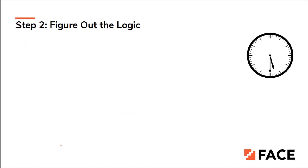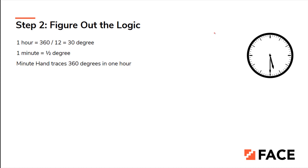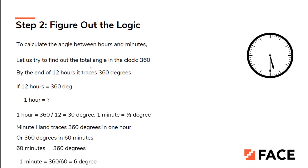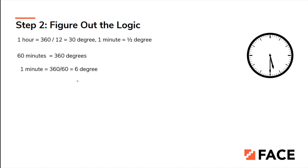For the minute hand, it traces 360 degrees in 1 hour, meaning 60 minutes equals 360 degrees. Therefore 1 minute equals 360 divided by 60, which equals 6 degrees per minute for the minute hand. So to summarize: for the hour hand, 1 hour = 30 degrees and 1 minute = 0.5 degrees; for the minute hand, 1 minute = 6 degrees.